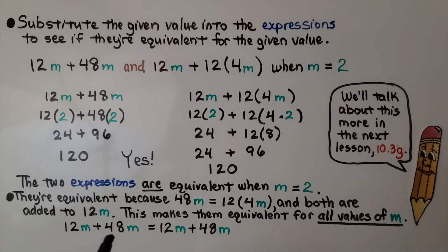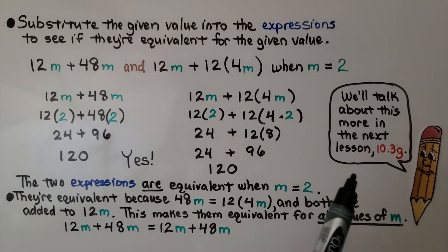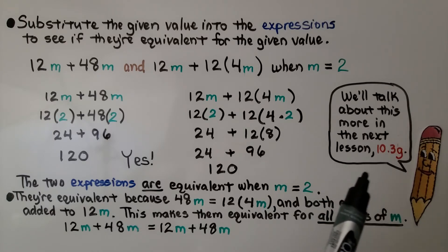12m plus 48m is equal to 12m plus 48m. We're going to talk about this more in the next lesson, 10.3g.